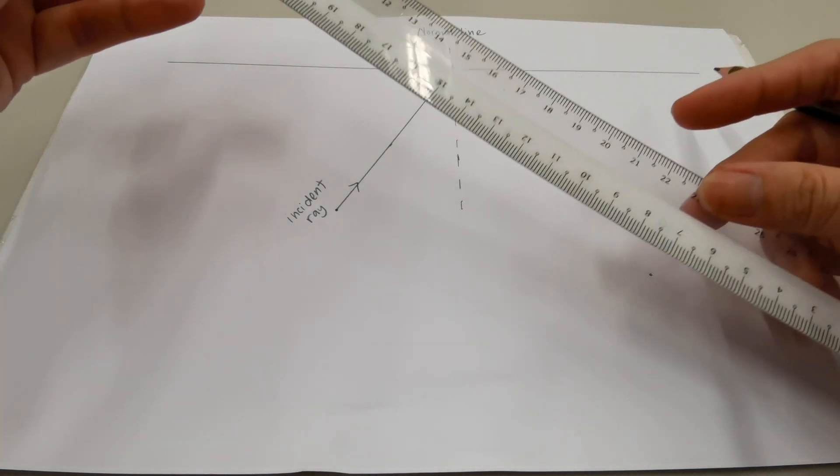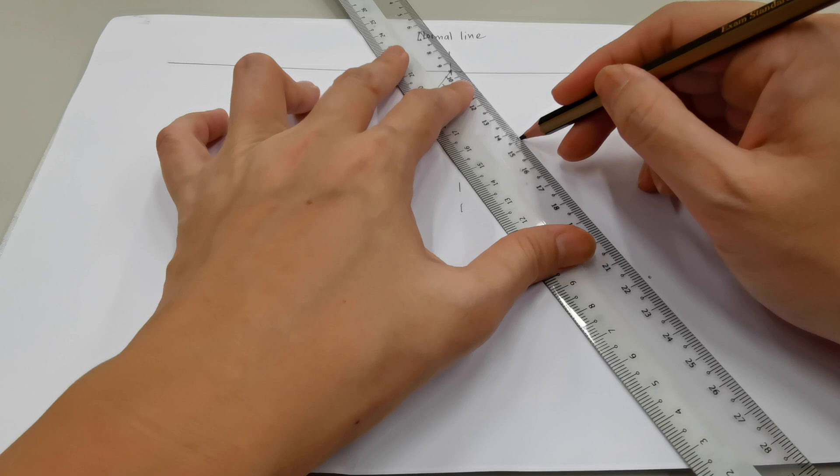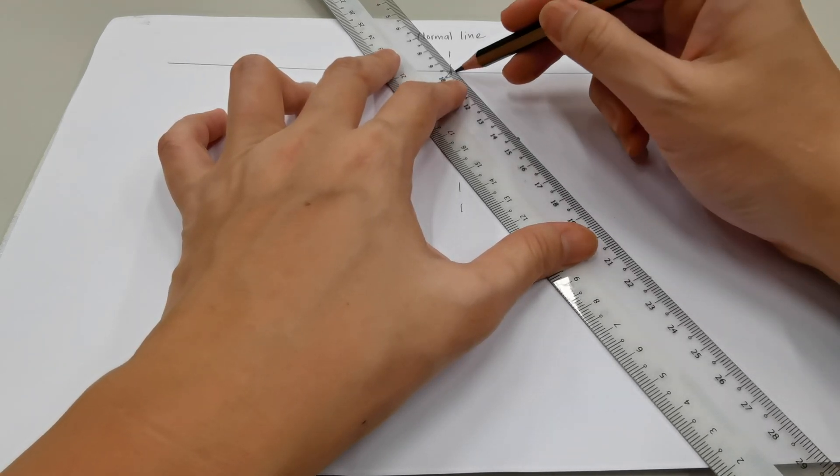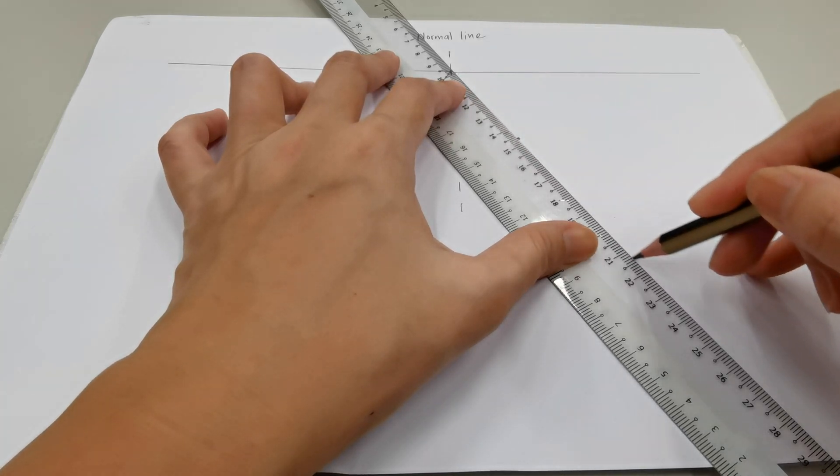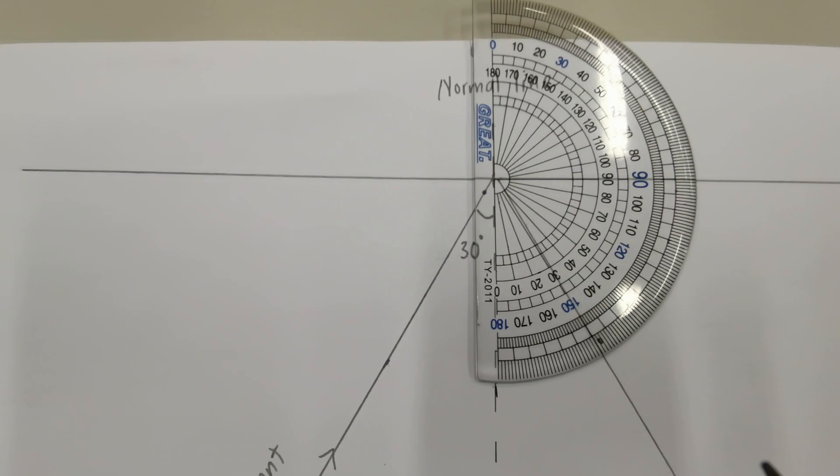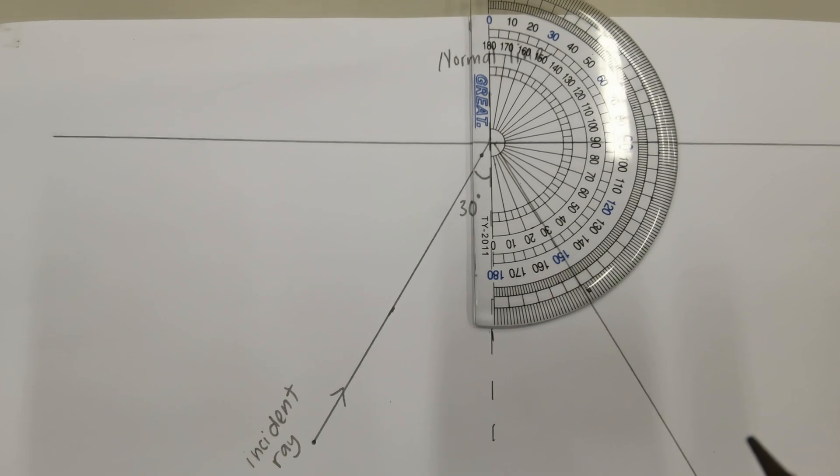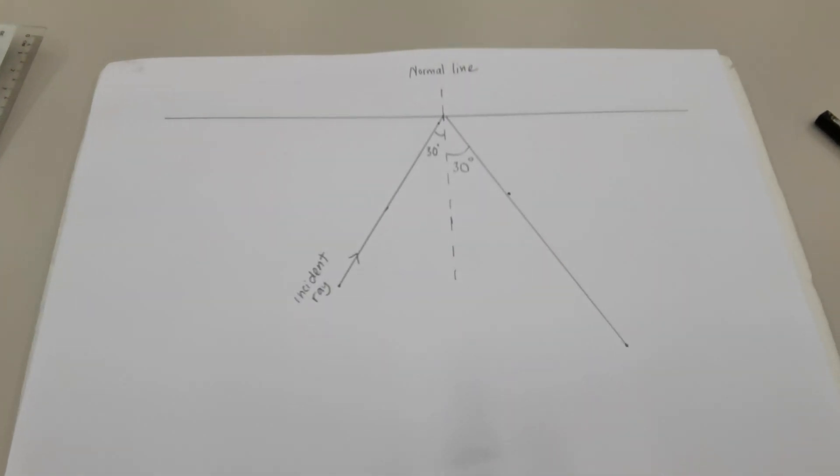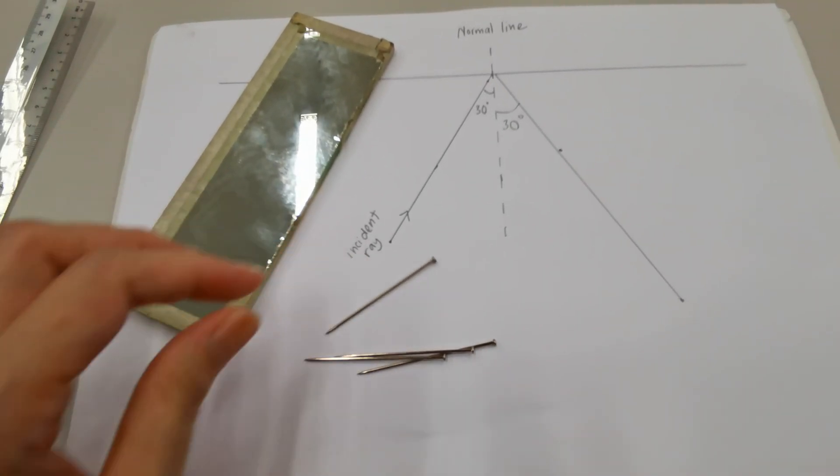So using our ruler and our pencil, we're going to connect these two holes in one line and using the protractor. So if you look at the angle, you can see that the angle is also 30 degrees, just the same as the incident angle. And that's how we conduct the experiment for reflection with optical pins.